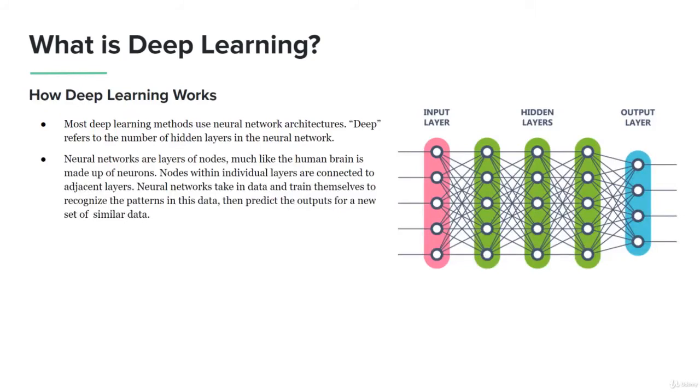How deep learning works: Most deep learning methods use neural network architecture. The deep refers to the number of hidden layers in the neural network. You can see here from the right hand side, the input layer, hidden layers, and then the output layers. The hidden layers are the ones doing essentially all the work there for the most part. Neural networks are layers of nodes, much like the human brain is made up of neurons. Nodes within the individual layers are connected to the adjacent layers. The neural networks take in the data and train themselves to recognize the patterns in this data, and then they predict the outputs for a new set of similar data.